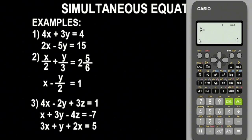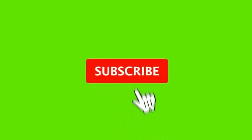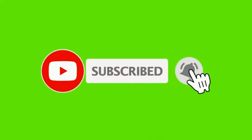Press Enter to get our x, y, and z values respectively. Our x is negative 1, y is 2, and z is 3. That's it! This is basically how you can solve problems involving simultaneous equations with x, y, and z variables. Hope you learned something interesting from this video.